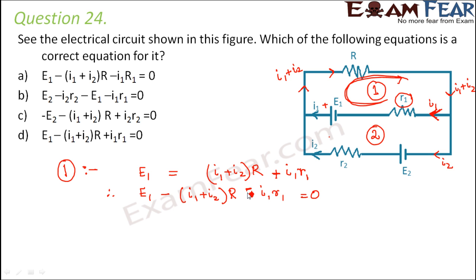So when it comes this side then it becomes minus. So please make note of these small things because generally by applying Kirchhoff's loop law we make mistakes with the sign convention. So here it is E1 minus I1 plus I2 into R minus I1 R1 is equal to 0. So if you compare it with the options given here you see that A is the correct option.